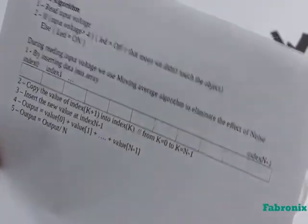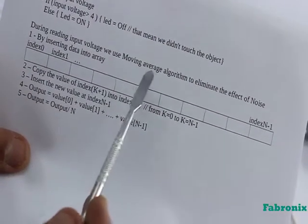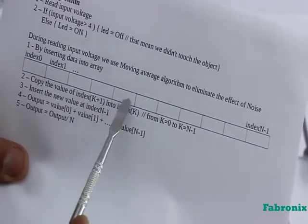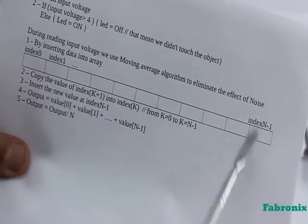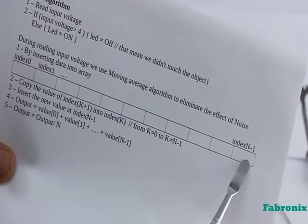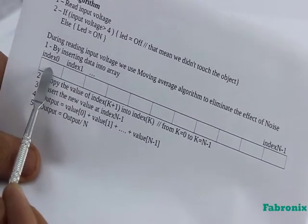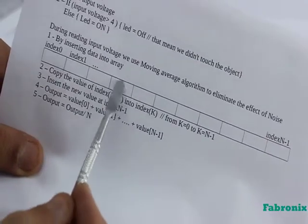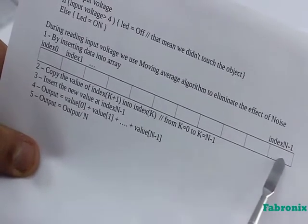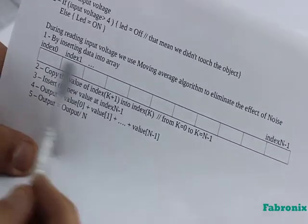Due to noise presence, we use a moving average algorithm where we insert the value of input voltage to an array. Then, to add a new value, we copy the value of index k+1 to index k and increase k from 0 to number of elements minus 1. And the new value is inserted to the index n minus 1. And all array elements will be shifted to the left.